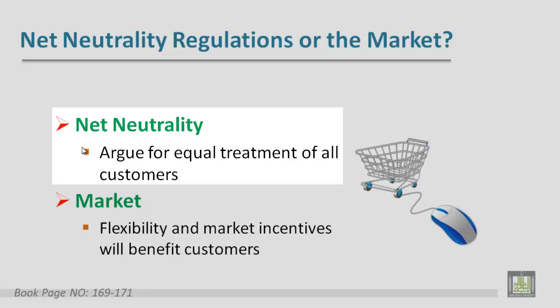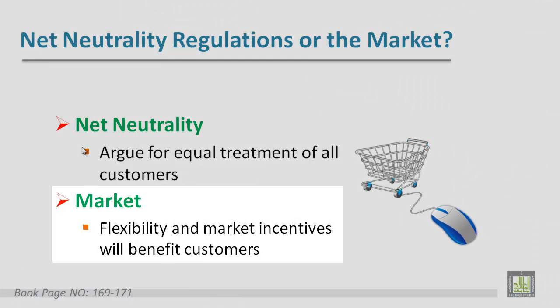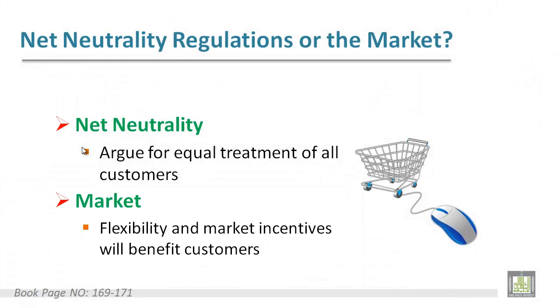Net neutrality advocates argue for equal treatment of all customers, including charging all customers the same rate for sending information over the internet and not giving priority to any particular content or customer. On the other hand, market flexibility and market incentives will benefit customers. Many internet content providers and large companies such as Microsoft and Amazon support net neutrality rules. Without those rules, some argue they will have to pay higher rates and communications companies will give special treatment to their own content providers.